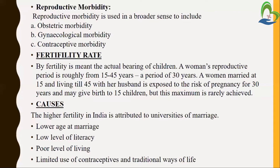So what are the causes of a higher fertility rate? Higher fertility in India is attributed to: the universality of marriage at a lower age, because in India previously early marriage was very common and the fertility rate was high. Low level of literacy — lack of education of the mother — and not using family planning methods also cause the fertility rate to be high. Poor level of living, meaning low socioeconomic status, limited use of contraceptives, and traditional ways of life including rituals and misbeliefs related to fertility — all these cause the fertility rate to be high.